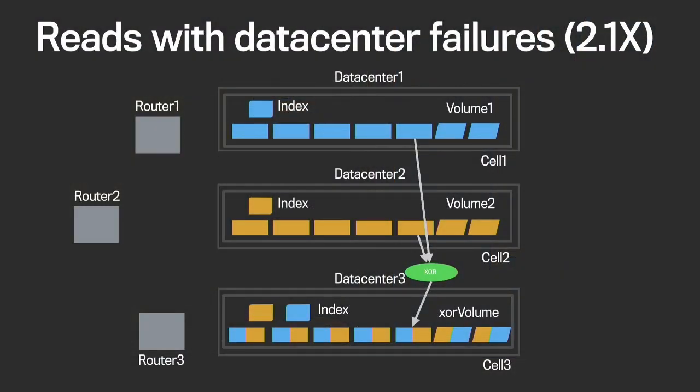One more failure mode is data center failure, where the whole cell can be down. The overall idea is that we create a cross-region parity — in this case a simple XOR. Assume we have volume 1 in cell 1 and volume 2 in cell 2. We create a byte-by-byte XOR and place the XORed volume in a third cell, cell 3. Cell 1, cell 2, and cell 3 are in three different data centers. When creating XOR volumes, we also copy both indexes of the source volumes into the XOR cell. The index is very small compared to actual data, so the storage cost is negligible.